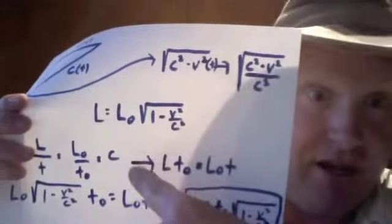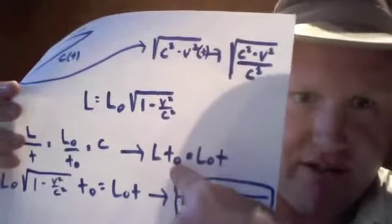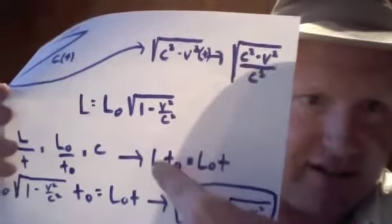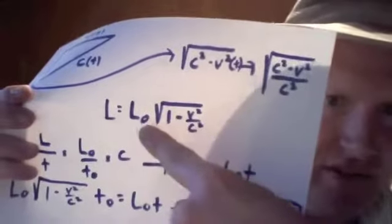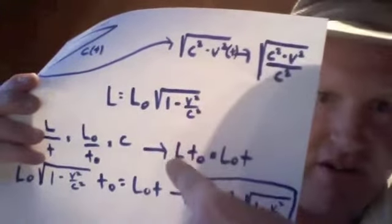What I do now is I take, remember, L times T sub O is equal to L sub O times T. Let's take the L and let's substitute in L sub O times the square root of 1 minus V squared over C squared.